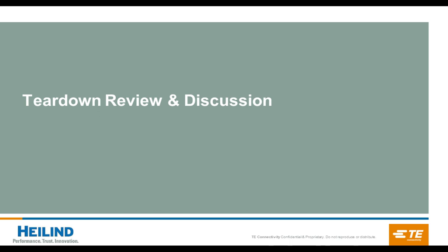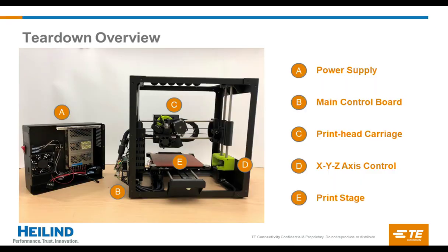Getting started with the teardown, let's take a deeper look at the device. This is a desktop consumer 3D printer, and we broke it into five main categories: the power supply, the main control board, the print head carriage, the XYZ axis control, and the print stage. These are five different and separate categories within this device, and they're all controlled or used a little bit differently.